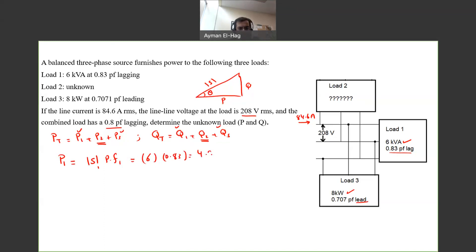This gives me 4.98 kilowatts. Then I can find Q1. Q1 is basically sine of theta equals Q over S. So it is S1 times sine of cosine inverse of power factor 1, which equals 6 times the sine of cosine inverse of 0.83, which equals 3.35 kVAR.